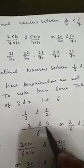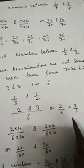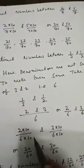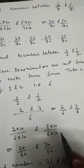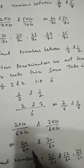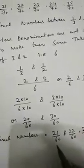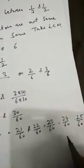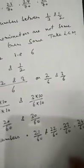Here the denominators are not the same, so we need to make them equal. The LCM of 3 and 2 is 6, so 1 by 3 and 1 by 2 become 2 by 6 and 3 by 6. Now applying the same method — multiply numerator and denominator by 10 — we get 20 by 60 and 30 by 60. So the rational numbers are 21 by 60, 22 by 60, 23 by 60, 24 by 60, and 25 by 60, all lying between 20 by 60 and 30 by 60.